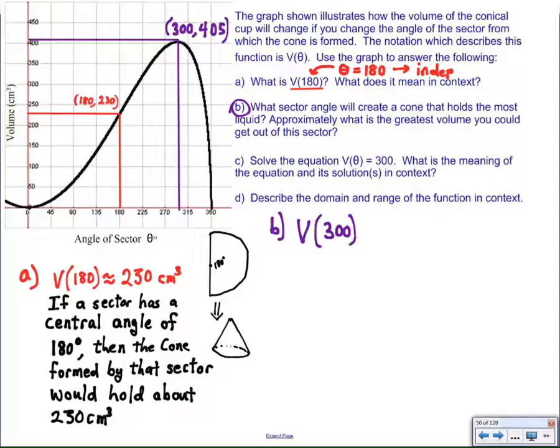The next question was asking about the maximum. So, it's basically saying, create a cone that holds the most liquid. That's the same as maximum volume. So, I find the maximum value on this graph, and I follow it over, and I get a sense that it's above 400, but not by much. So, I write 405 cubic centimeters here.